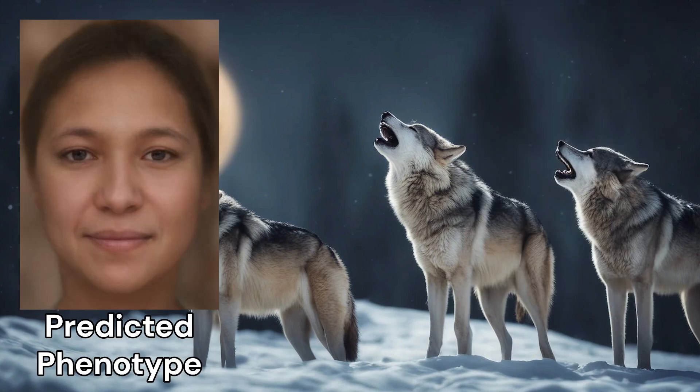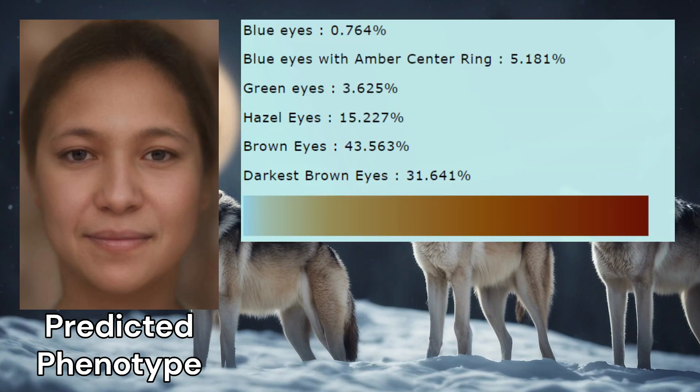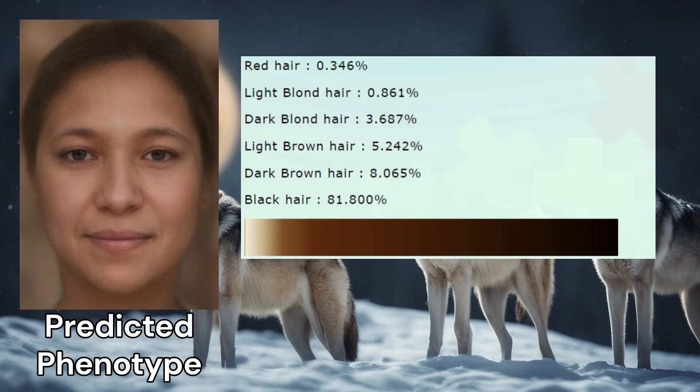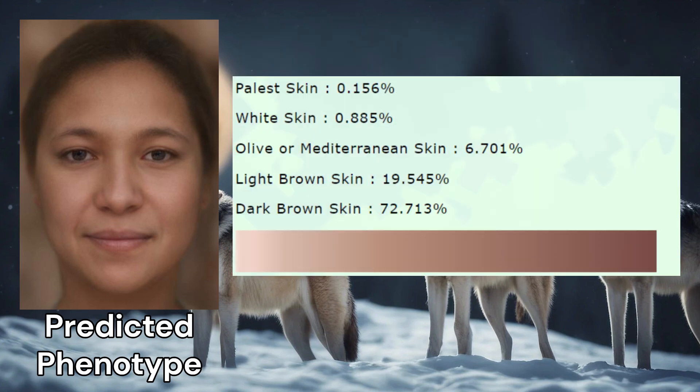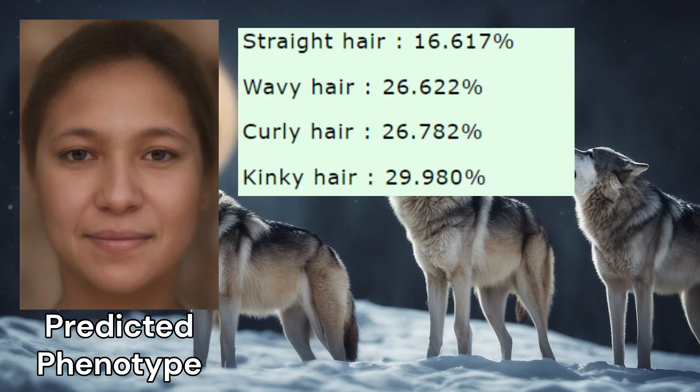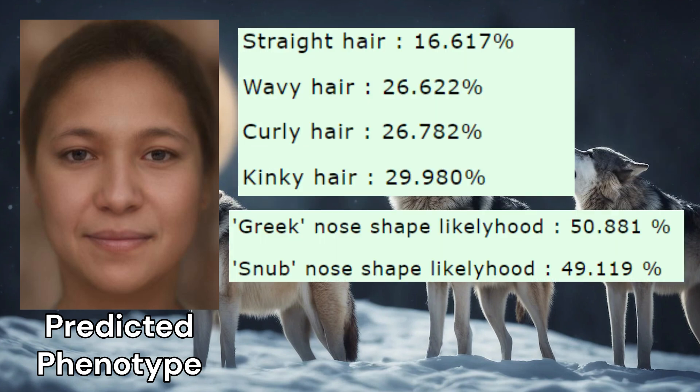In terms of coverage for coloring-related traits, this prediction is based on only two SNPs. Nonetheless, based on this very limited data, she is predicted to have brown eye color, black hair color, and dark brown skin color. Her predicted hair texture is kinky, and her predicted nose shape is Greek.